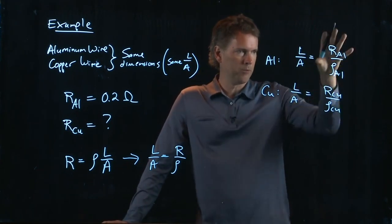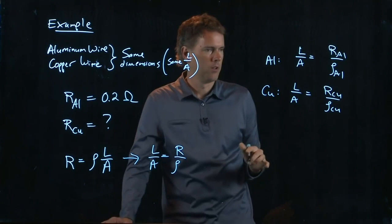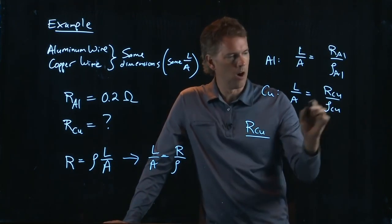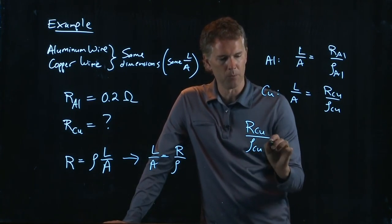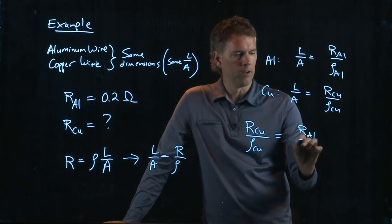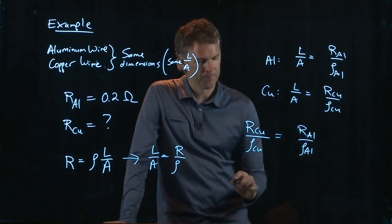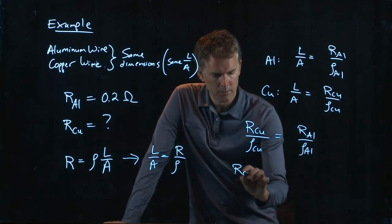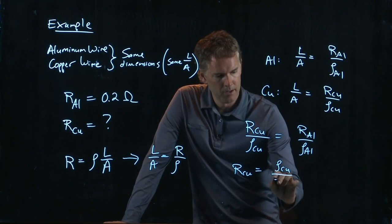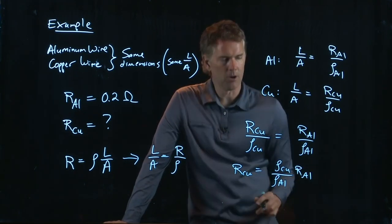L over A is the same, so we can equate the right sides. And what we're looking for is R of copper. So let's write it like this. R of copper divided by the resistivity of copper is equal to R of aluminum divided by the resistivity of aluminum. So what is R of copper? It is R of copper divided by R of aluminum times R of aluminum.